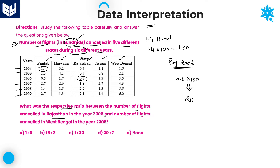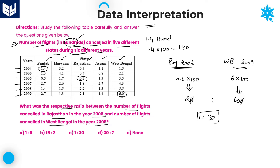And the second value is number of flights cancelled in West Bengal in the year 2009. West Bengal, 2009 is the last year, and the value is 6. This value is given as 6, so you need to multiply that value with 100 — 6 into 100 which is equal to 600. Now the question is what is the ratio of these two? 20 is to 600. Zeros get cancelled, then 2 is to 60, and you can cancel by 2 to get 1 is to 30. Therefore, the required ratio of number of flights cancelled from Rajasthan in 2006 and West Bengal in 2009 is equal to 1 is to 30. Option C is the right answer.